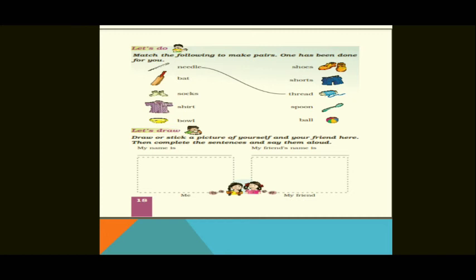Next section is 'Let's Draw'. Draw or stick a picture of yourself and your friend. There are two boxes — the first box is labelled 'me', where you paste a picture of yourself, and the second box is for your friend. Then write: 'My name is ___' and 'My friend's name is ___'.